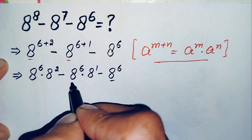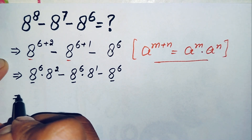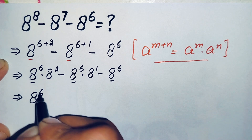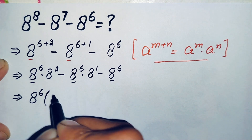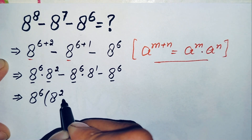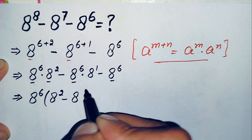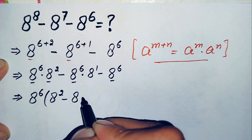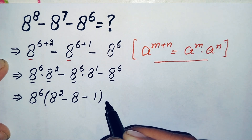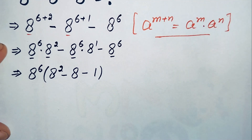Now f raised to power 6 is common in all the terms, so let's take out f raised to power 6 as a common factor. This will become f raised to power 6 times the quantity f squared minus f minus 1.